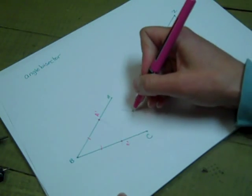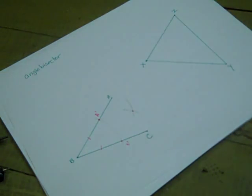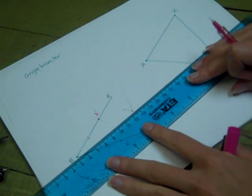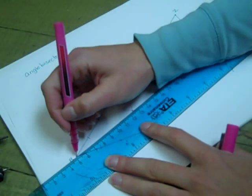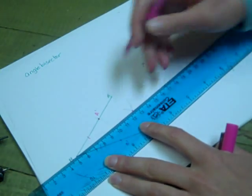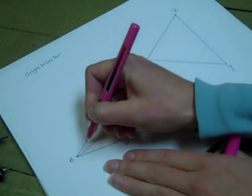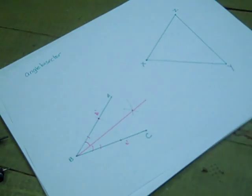And that intersection point should be directly in the middle of angle ABC. And so I have created an angle bisector.